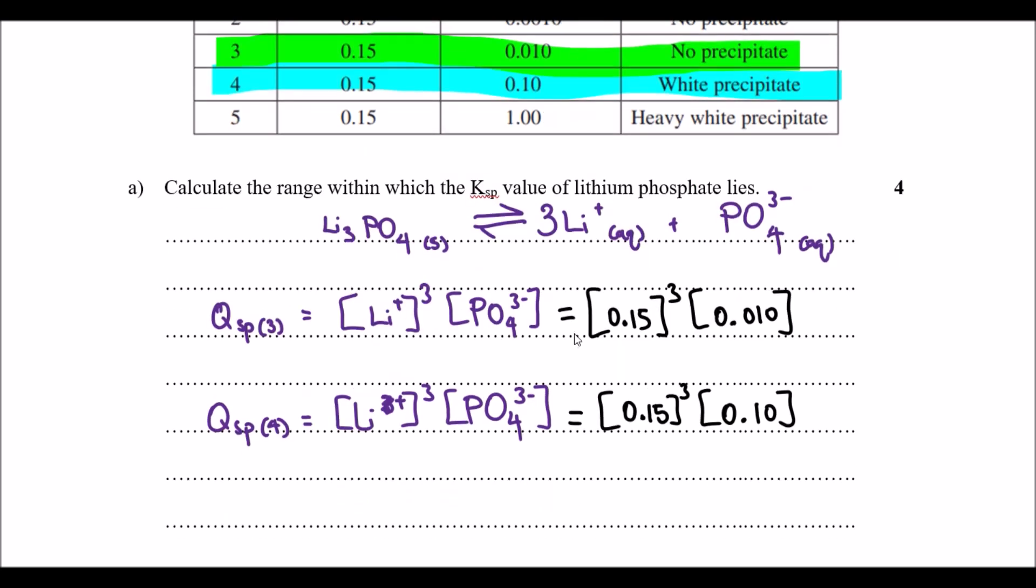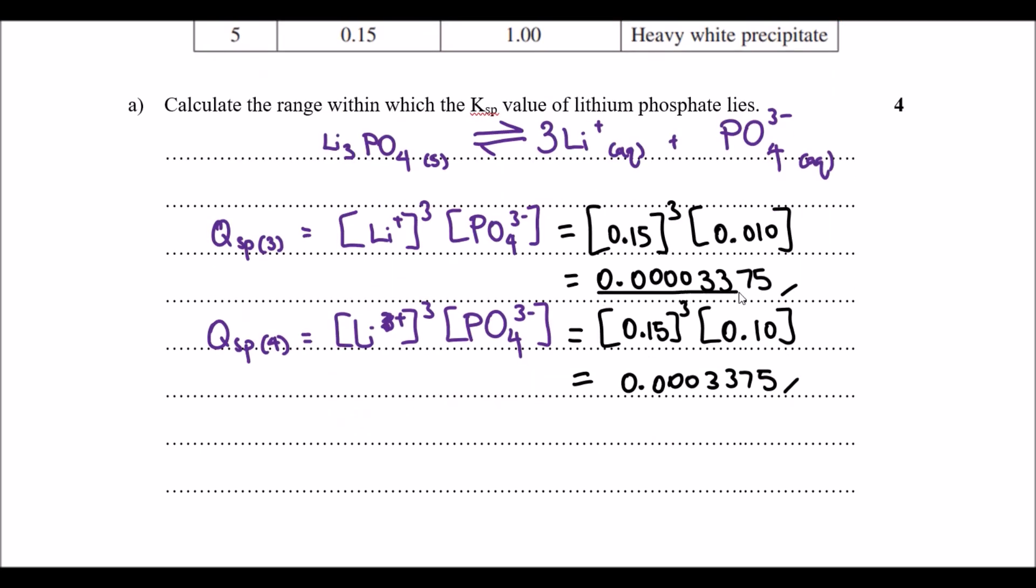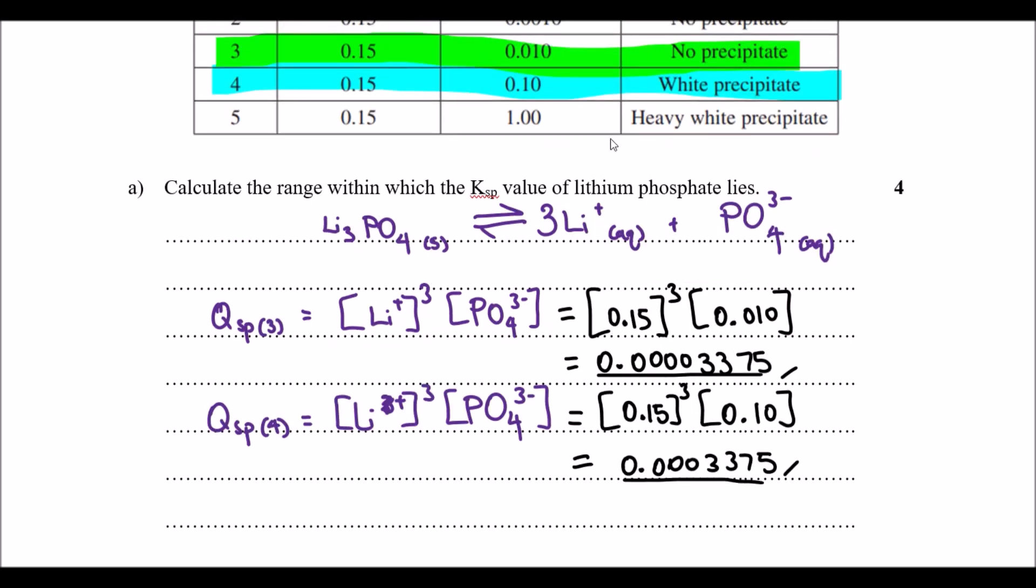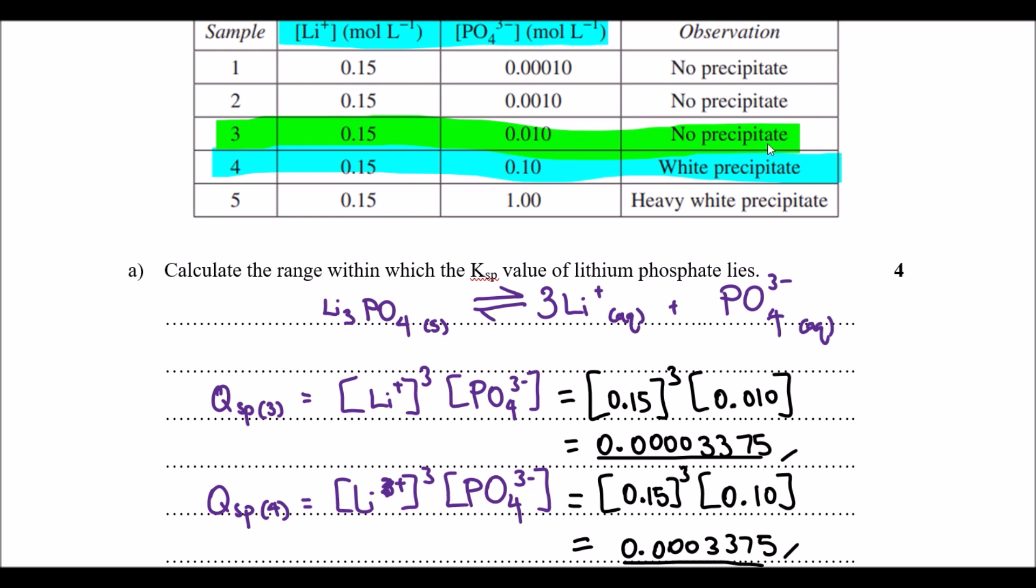Let's put that in our calculator and see what values we get. The first one we have is 0.00003375. If we look at our second one, 0.0003375. It says calculate the range within which ksp value would lie. This is the range that we have here. We know that originally we went from no precipitation to achieving a white precipitate.